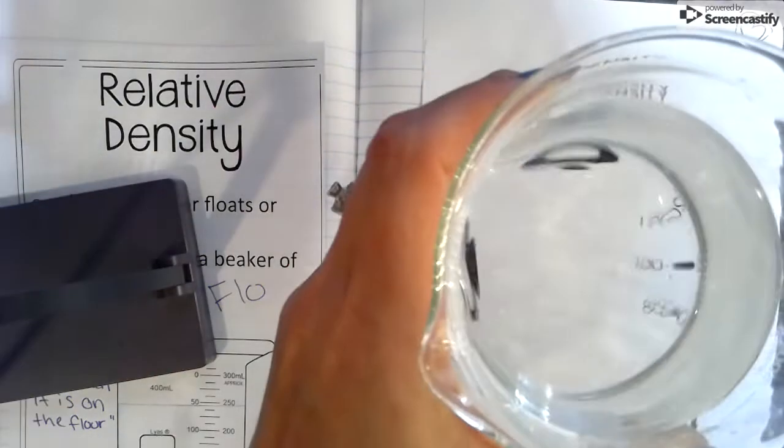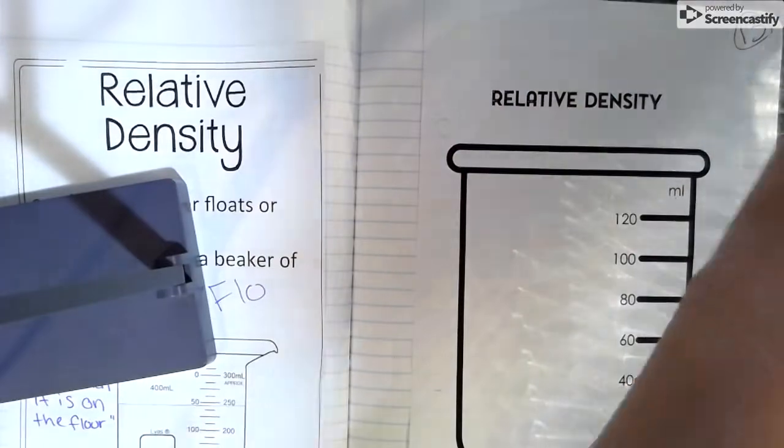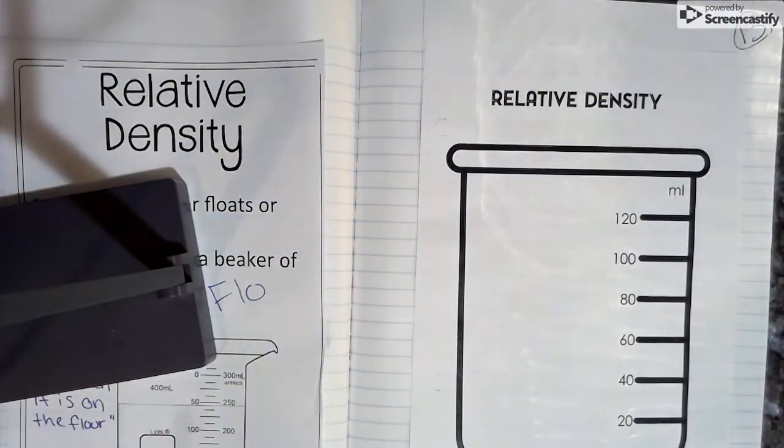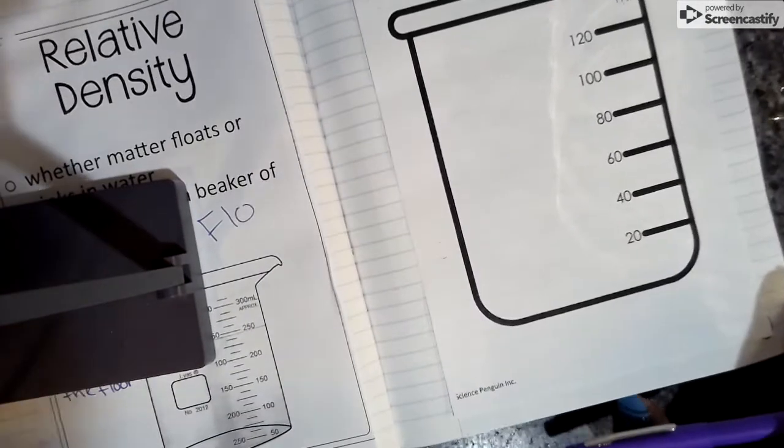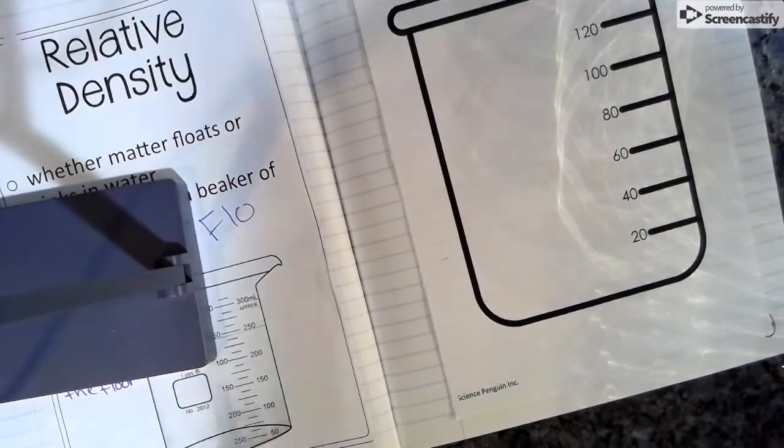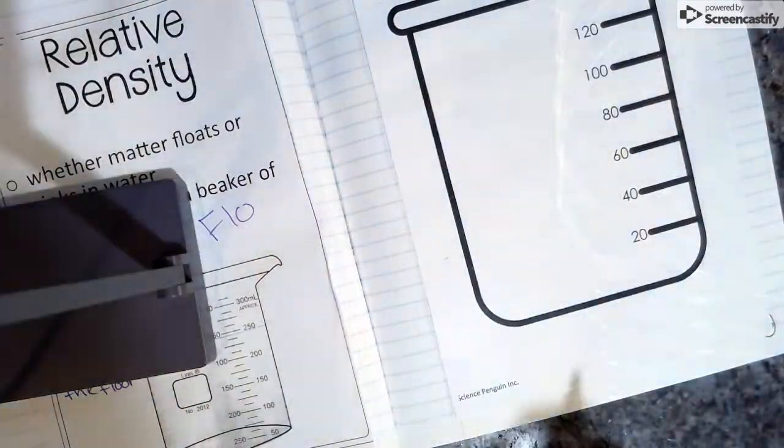So, hang tight while I get some water. All right, so what I want you to write first in your journal is I want you to somewhere on the white space, doesn't matter where, I want you to write the names of our objects.